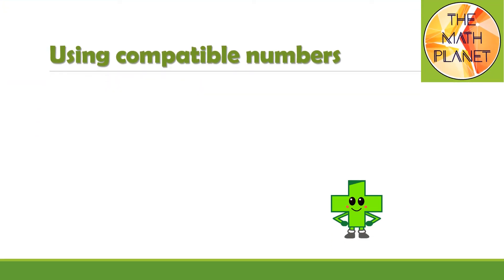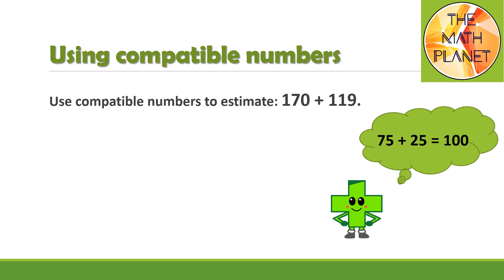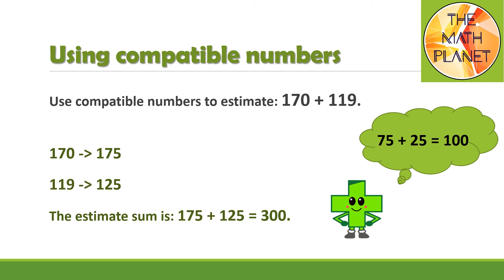Let's try another example using compatible numbers. Use compatible numbers to estimate the sum of 170 plus 119. We need to think of pairs of numbers that are easy to add and that are close to my addends. Let me think of 75 plus 25 equals 100. 170 is close to 175, and 119 is close to 125. So my estimate sum can be 175 plus 125 equals 300.